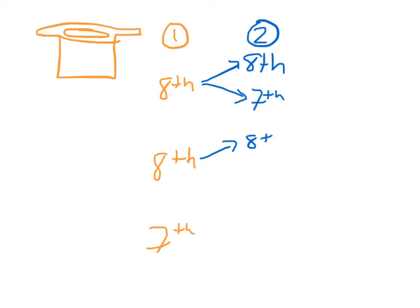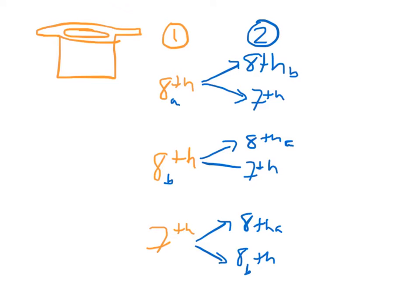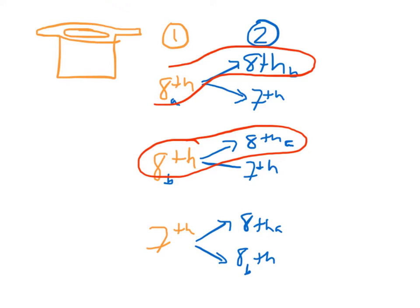If you got the eighth grader the first time — call them A and B — you could get B first and then A, or you could get the seventh grader. And if you got the seventh grader first, then you could get eighth grader A or eighth grader B. So what is the probability that two eighth graders will get to go? We see it happens in two out of six outcomes, which reduces to one-third. So the chance of getting two eighth graders is one-third, or 33 and a third percent.